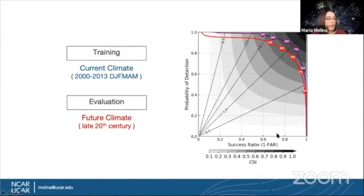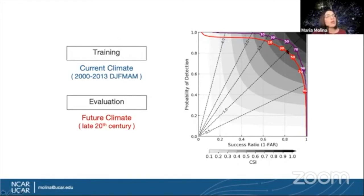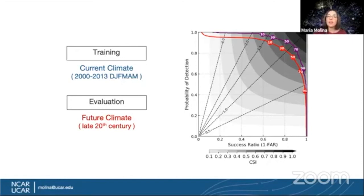Here we have a performance diagram with success ratio on the x-axis, probability of detection on the y-axis, contour lines showing critical success index, and diagonal dashed lines showing bias. The curves represent our model with varying probability thresholds. Curves towards the top right show good performance. The red line shows future storm objects, and the purple shows a subset of the future climate that are outlier storms — those exceeding the 95th percentile of low-level moisture. We see very good performance for both of these cases in the future climate.